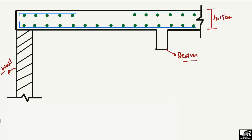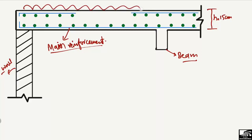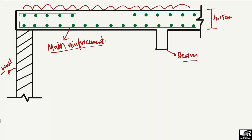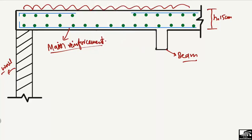Here we can see the longitudinal, or main, reinforcement. This is known as the main or longitudinal reinforcement, and it is used to take the main load acting on the slab. Due to this load there will be bending stresses in the slab — it will bend like this.